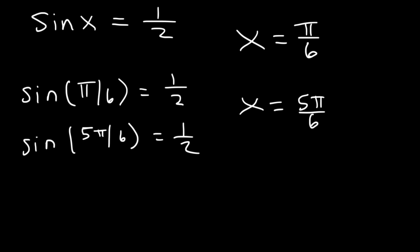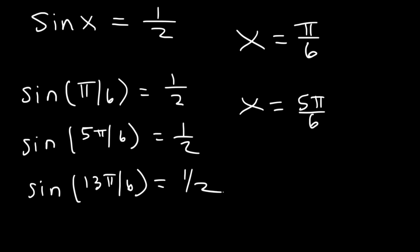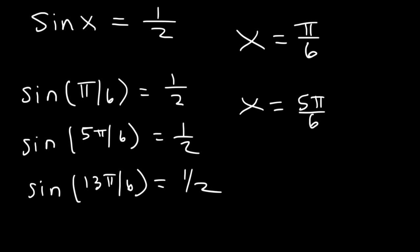But if you want to find all solutions, it doesn't end there. For example, if you add 2π to π/6, that gives you 13π/6. Sine of 13π/6 is also 1/2. And if you add 2π to 5π/6, that gives another coterminal angle. 2π is the same as 12π/6, so 5π/6 plus 12π/6 is 17π/6.